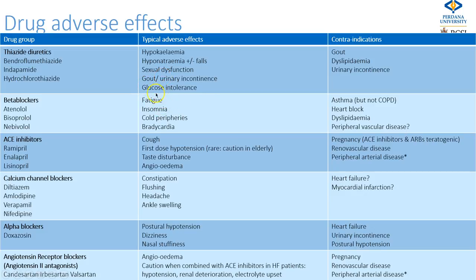Common side effects of beta blockers include fatigue, tiredness, insomnia, cold peripheries, reduced cardiac output, and bradycardia. Asthma is an absolute contraindication for beta blockers but COPD is not. Patients with heart block should not be given beta blockers. They may worsen dyslipidaemia and there may be concerns in patients with peripheral vascular disease.